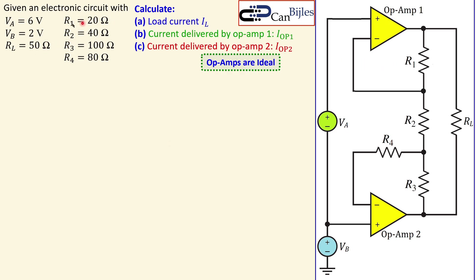Let's look at our problem. We have the following circuit with two voltage sources Va and Vb — the values are six volts for Va and two volts for Vb. We have a load connected here of 50 ohms, and we have four resistors R1, R2, R3, and R4 with the given values. We would like to calculate the load current IL, the current delivered by op-amp one (Iop1), and the current delivered by op-amp two (Iop2). All op-amps are ideal.